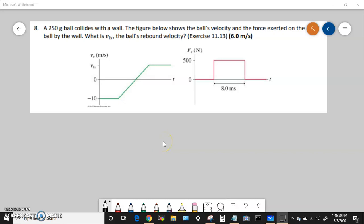Alright guys, now we're going to do Chapter 11 problems. The first problem we're looking at is a 250 gram ball collides with a wall. The figure below shows the ball's velocity and the force exerted on the ball by the wall. What is VFX, the ball's rebound velocity? Essentially the rebound velocity is the final velocity in the X.